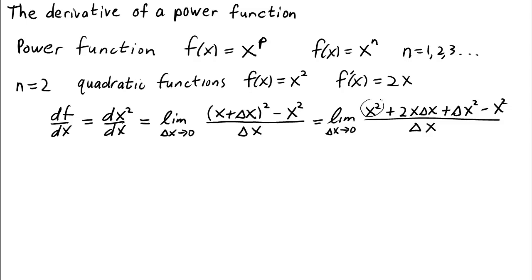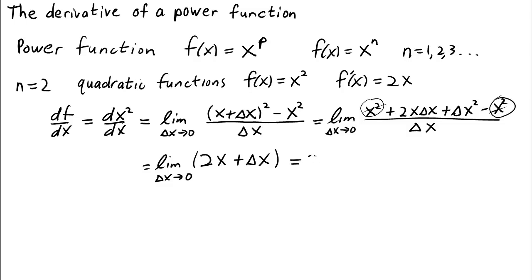The first term, x², is cancelled out by the x² that we subtract off at the end. The second term, when we divide by Δx, just becomes 2x. The third term becomes Δx. When we take the limit as Δx goes to zero, this Δx term goes away and we're just left with the final answer that the derivative is 2x. Now that was fine for a quadratic, but what happens when n, the exponent, becomes larger than 2?